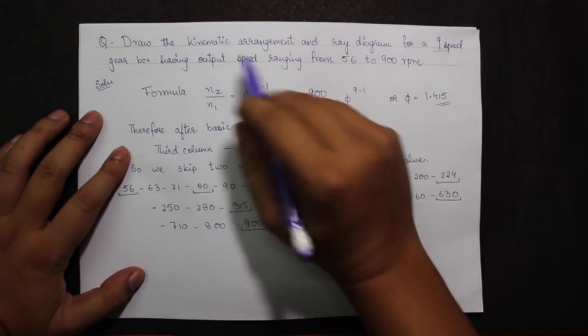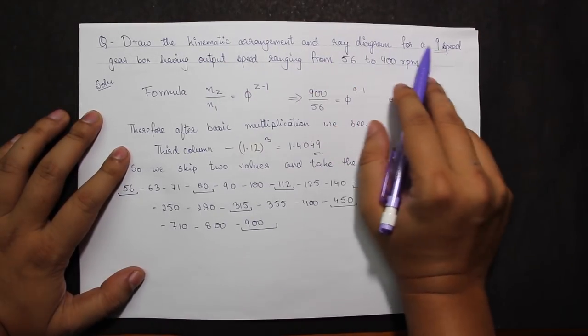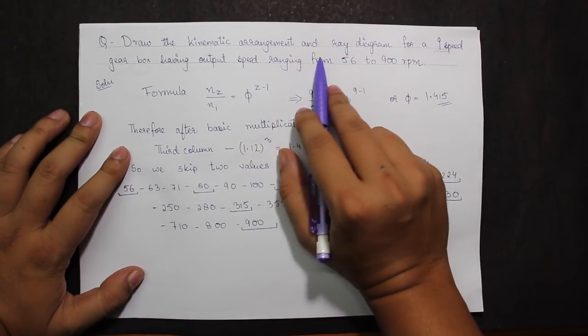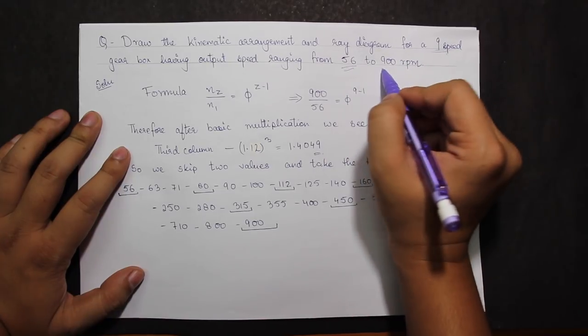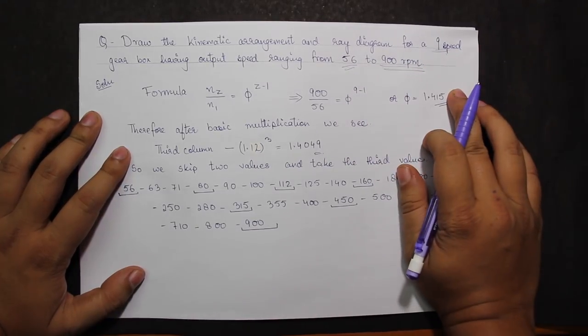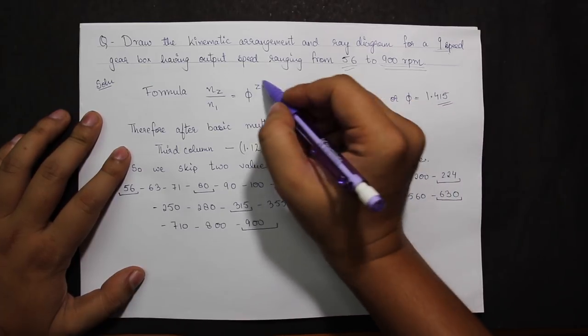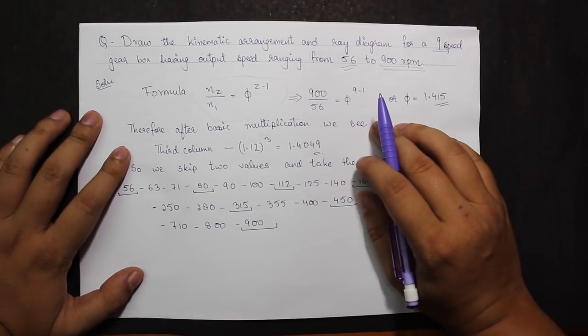Let's look at the question for a 9-speed gearbox. The question states: draw the kinematic arrangement and diagram for a 9-speed gearbox having output speeds ranging from 56 to 900 rpm. As the formula states, n final upon n initial equals φ to the power z minus 1.